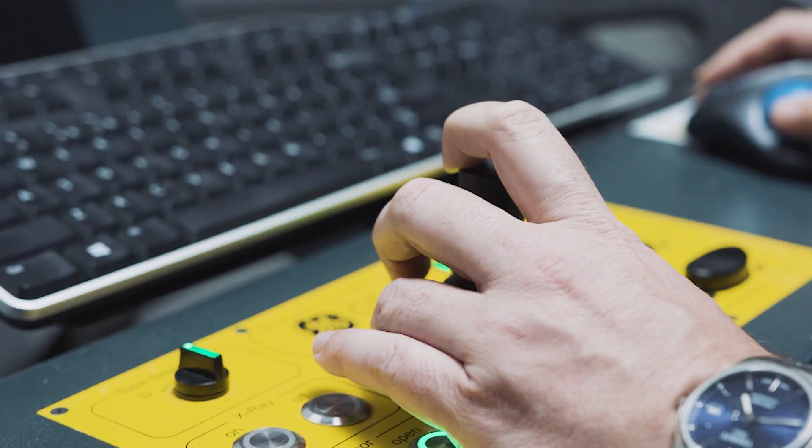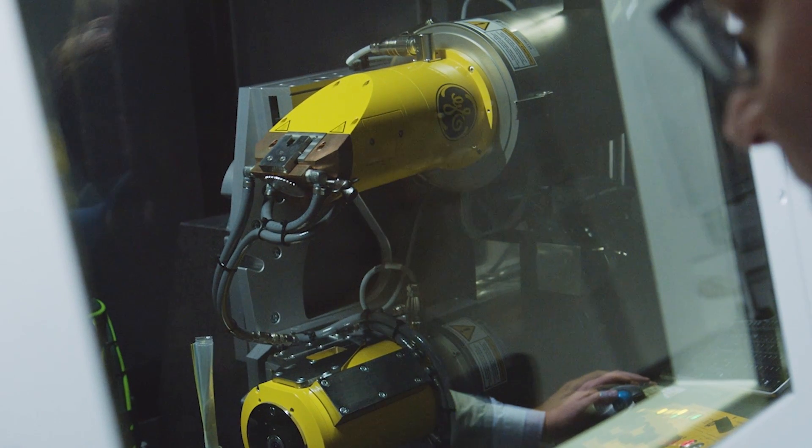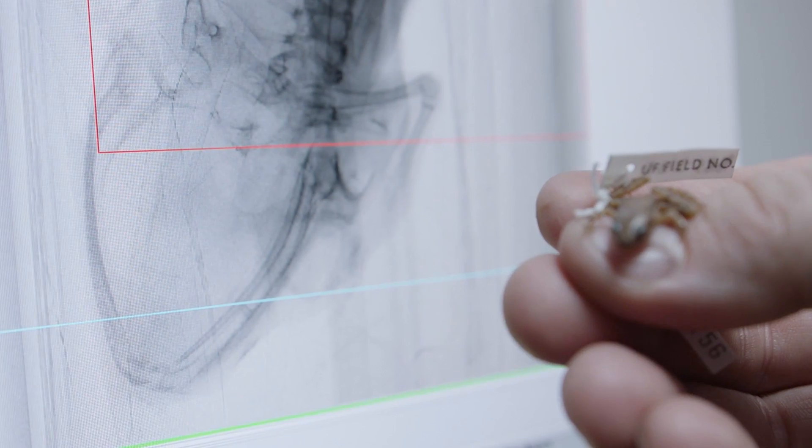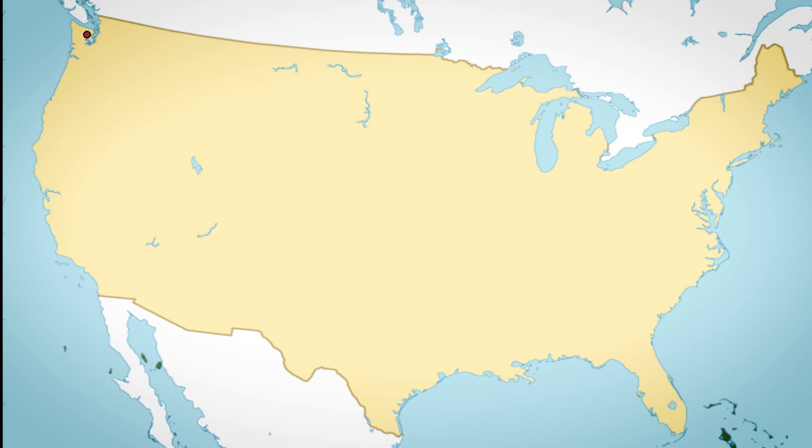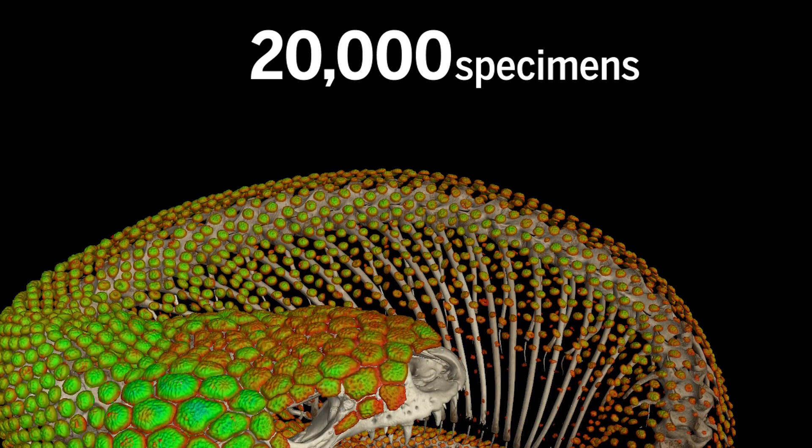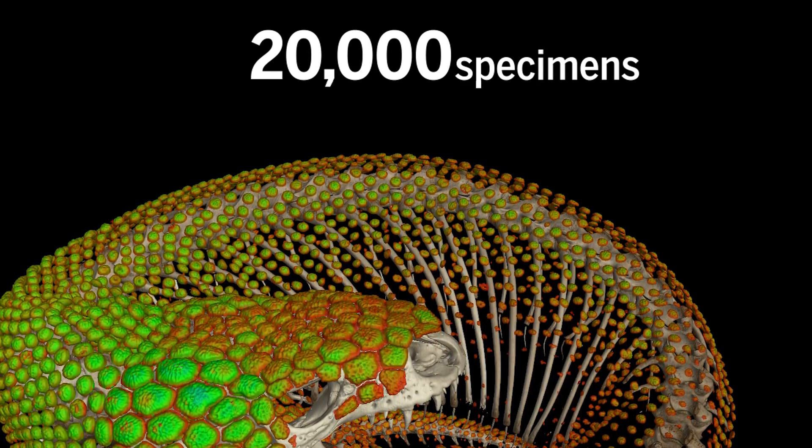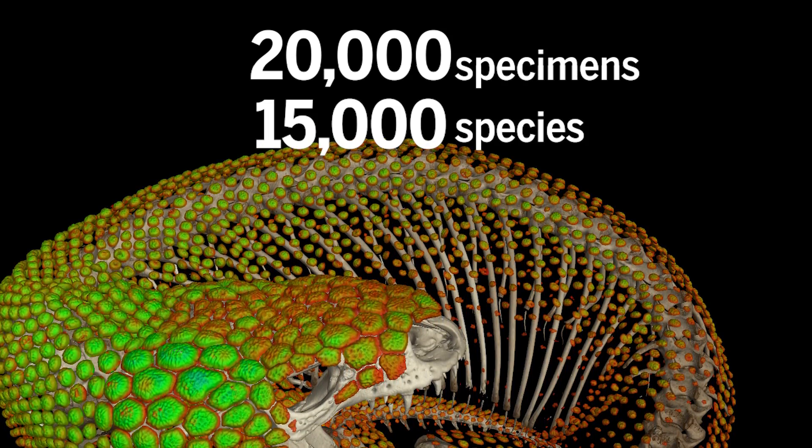But the plan to scan all vertebrates will change that by creating 3D models of the animals and uploading them to a free online database. Over the next four years, 16 universities and museums across the United States will scan more than 20,000 fluid-preserved animals, covering about 15,000 different species.